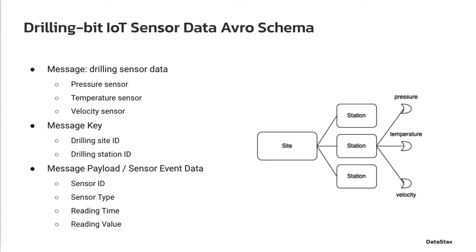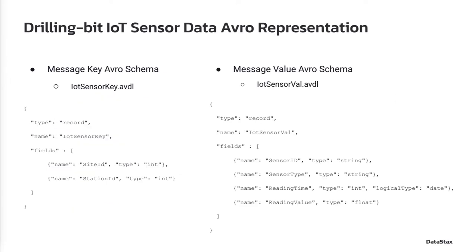The first question is: how do we model the message schema? Assuming the business wants to do data analysis based on the sites and stations, one possible way to design the message schema is to have the combination of site ID and station ID as the message key, and the actual sensor reading as the message payload.